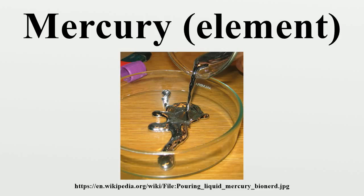Chemical properties: Mercury does not react with most acids, such as dilute sulfuric acid. Although oxidizing acids such as concentrated sulfuric acid and nitric acid or aqua regia dissolve it to give sulfate, nitrate, and chloride. Like silver, mercury reacts with atmospheric hydrogen sulfide. Mercury reacts with solid sulfur flakes, which are used in mercury spill kits to absorb mercury.